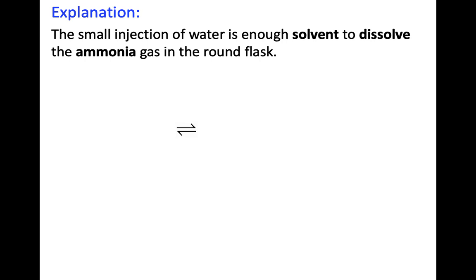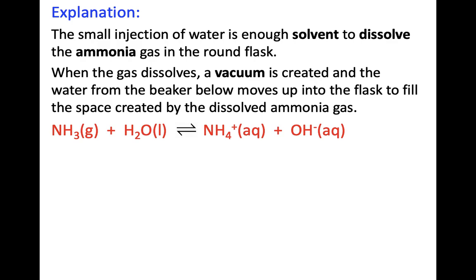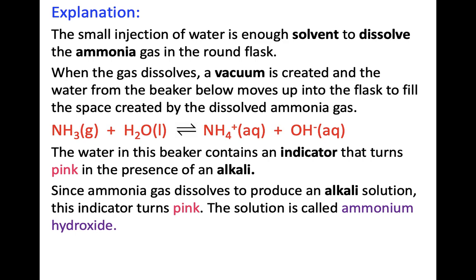What exactly is happening here? The small injection of water dissolves the ammonia gas inside the round flask. When the gas dissolves, a vacuum is created and the water from the beaker moves up into the flask to fill the space created by the dissolved ammonia gas. Ammonia reacts with the water to produce the ammonium ion and hydroxide ion. The water in the beaker contains an indicator that turns pink in the presence of an alkaline. Since ammonia gas dissolves to produce an alkaline solution, the indicator turns pink and the solution is called ammonium hydroxide. The indicator is called phenolphthalein.